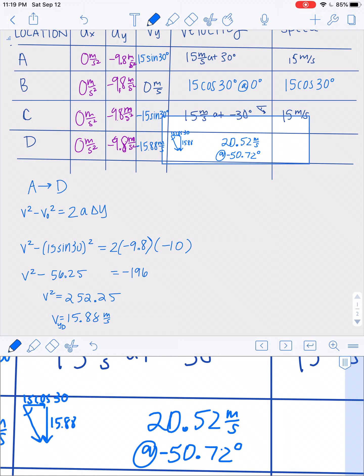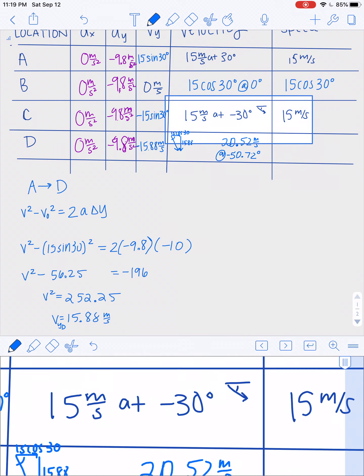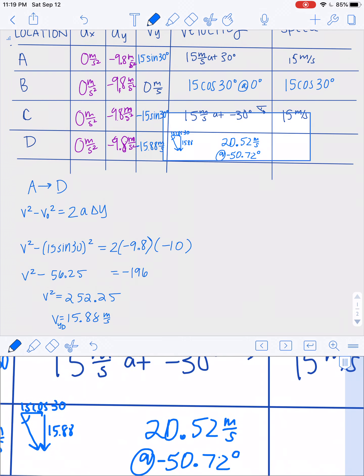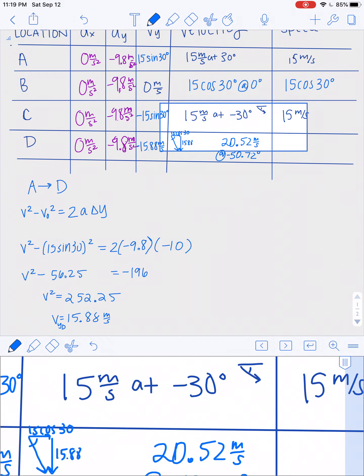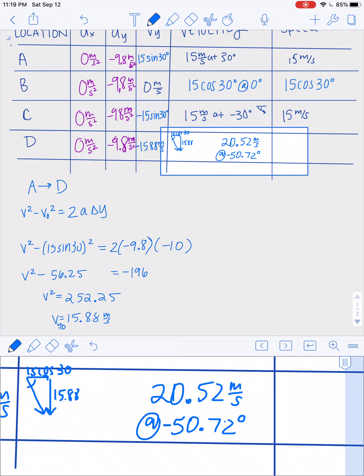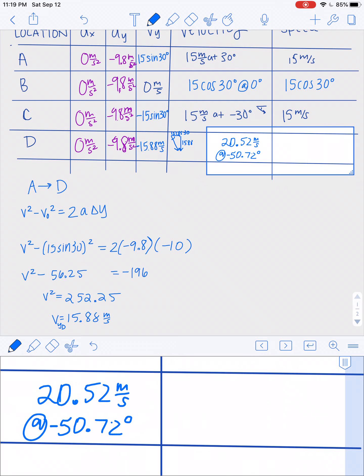So hopefully you're getting something fairly similar with your trig identities. It makes sense because it should be a bigger velocity. And our angle should also be bigger because our Y component is getting bigger. And so then we can finally fill in that last box. And that's all for the notes.